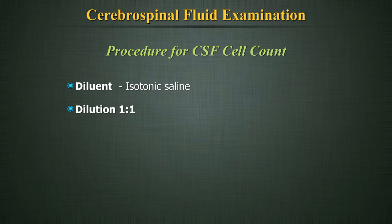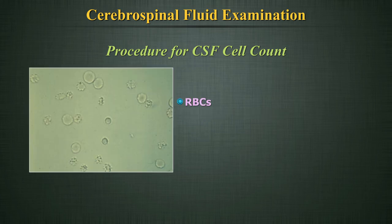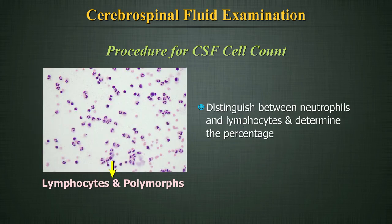If the counts are extremely high, as in WBCs, dilution with Turk's fluid can also be done. RBCs and WBCs are counted separately. Care must be taken to check if the RBCs are crenated or not. In subarachnoid hemorrhage, crenated cells are seen as opposed to normal-looking red cells of a traumatic tap. It is also possible to distinguish between neutrophils and lymphocytes and determine the percentage of each type.